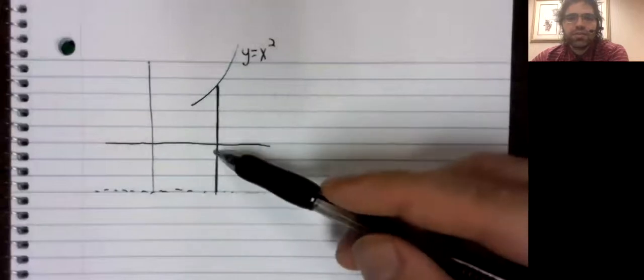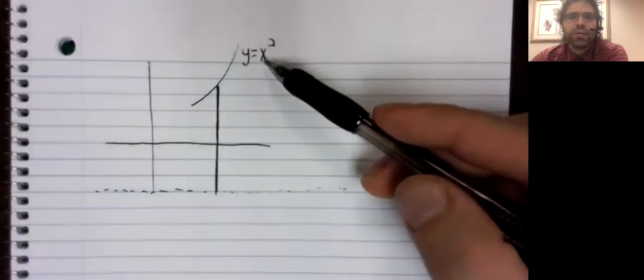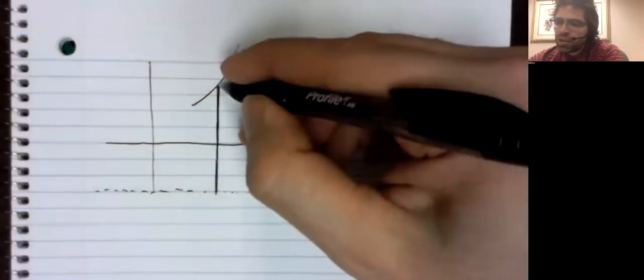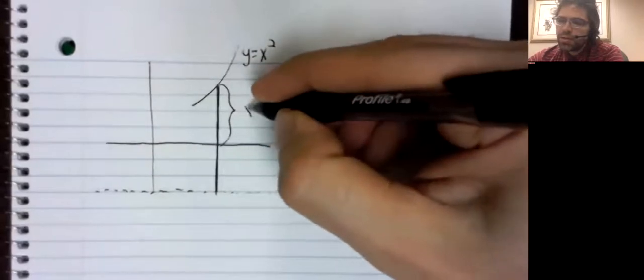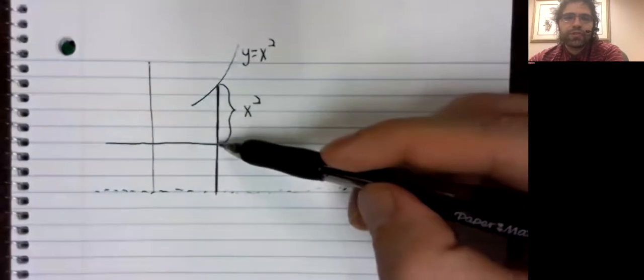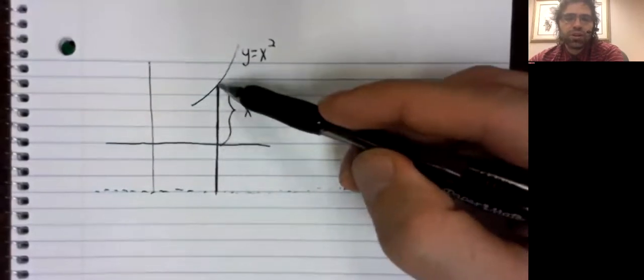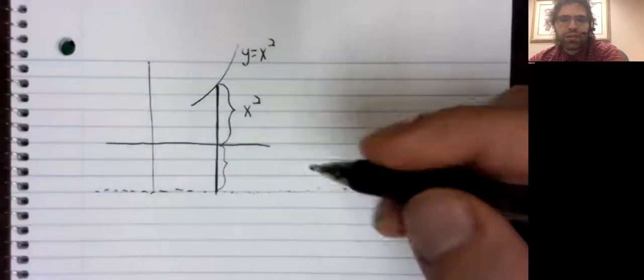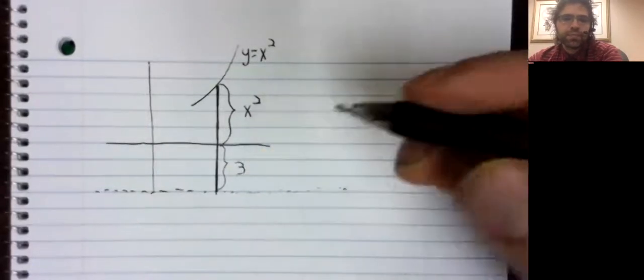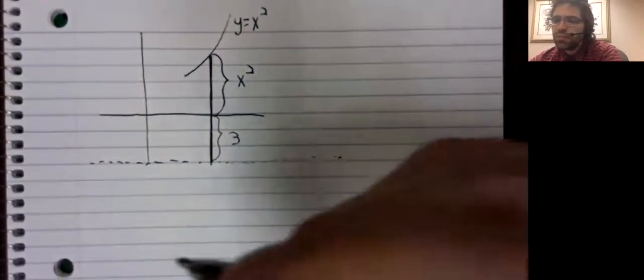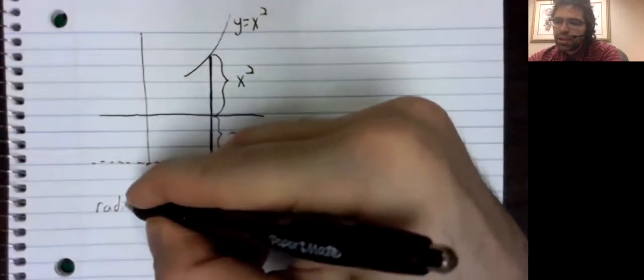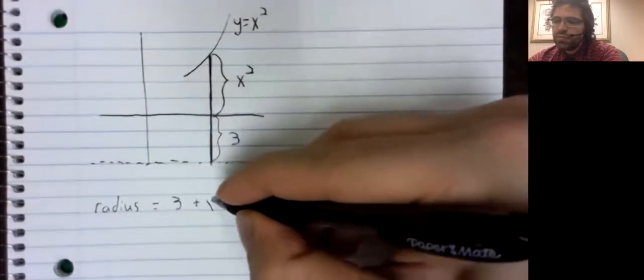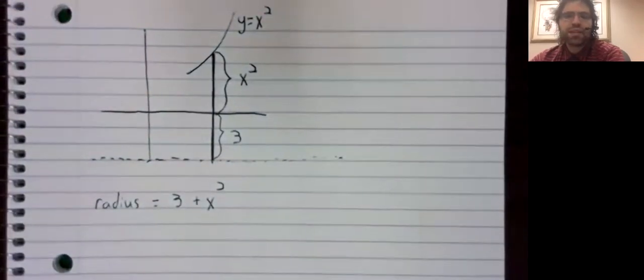So what is this distance? Well, we'll break it into pieces. This is y equals x squared here. That's the distance from the axis to the curve. And this is y equals negative three. So that distance is three. And the radius is three plus x squared.